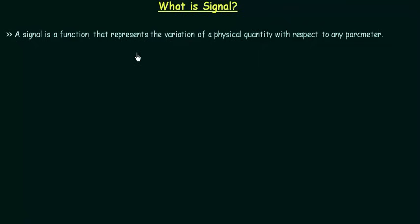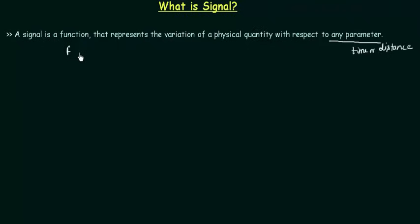A signal is a function that represents the variation of a physical quantity with respect to any parameter. This parameter is the independent quantity and it is generally time or distance. The function is dependent upon this independent quantity. If my function is f and the independent quantity is x, I write it as f(x), showing that the function is dependent on x.